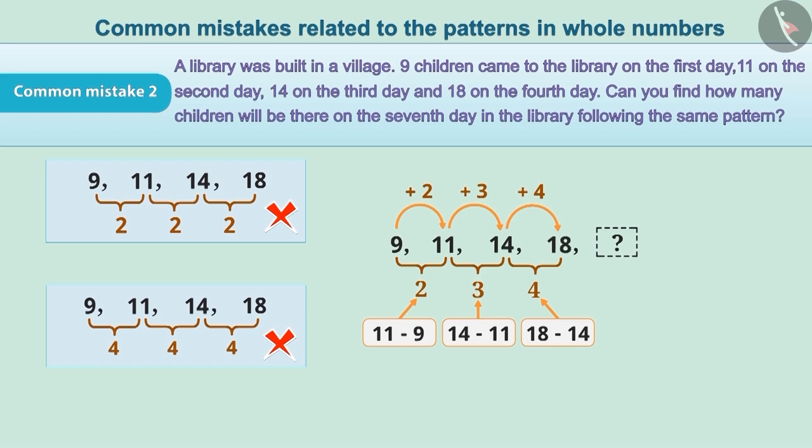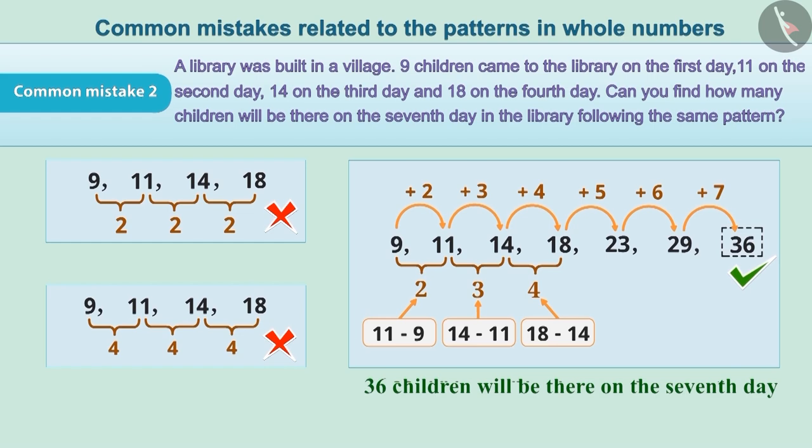add 5 to 18 to get the 5th term, which is 23. Adding 6 to 23, we get the 6th term, which is 29. And adding 7 to 29, we get the 7th term, which is 36. This is the correct answer for the given question.